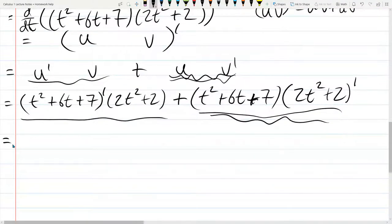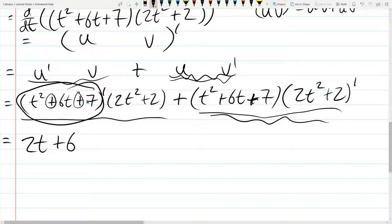Now we're ready to actually take these derivatives. So derivative of the first, t squared is 2t. You're splitting it across addition here. Plus 6 times t to the 0 power. Plus derivative of 7, derivative of any constant, is 0. So I'm not even going to write that.